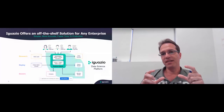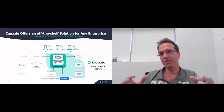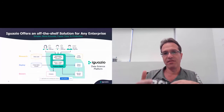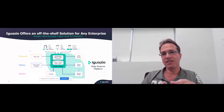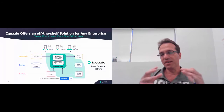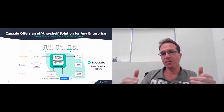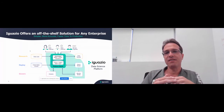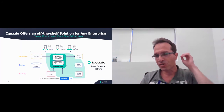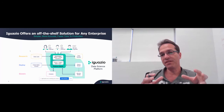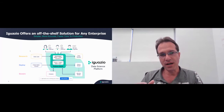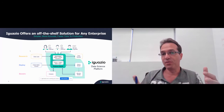Feature Store empowers data scientists with very simple APIs to create things like sliding windows, aggregation, all kinds of transformations, filtering and joining data — using a very abstract API. This simplifies the process of creating and managing features, and those features are ready for production from day one. The same set of logic is good for training, for serving, and for monitoring.